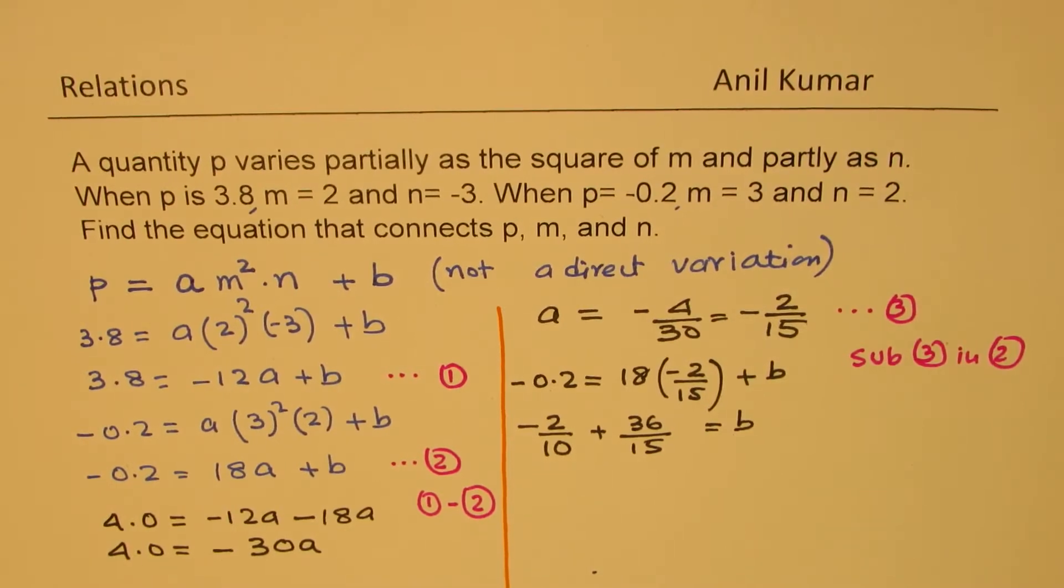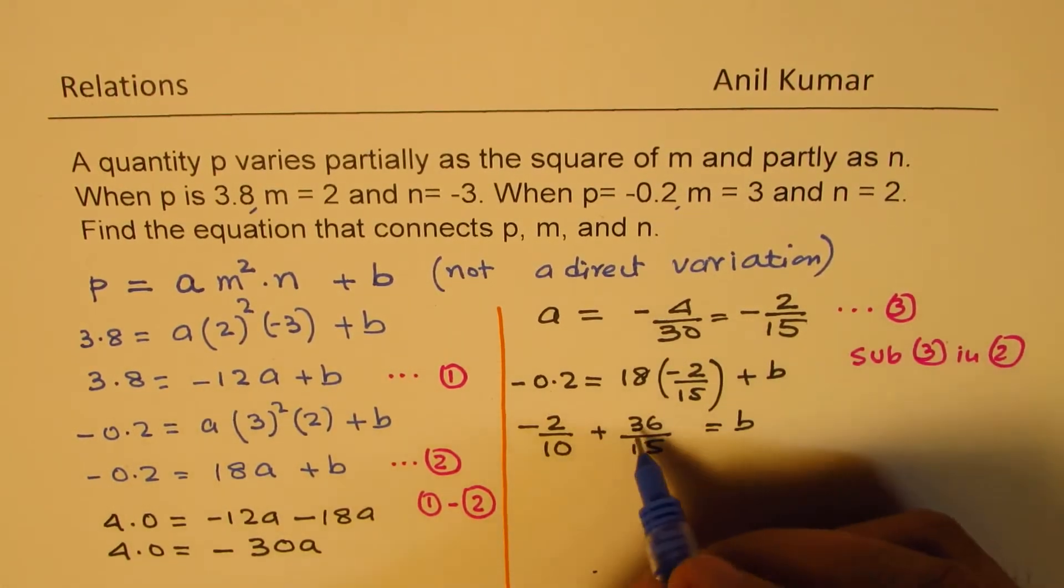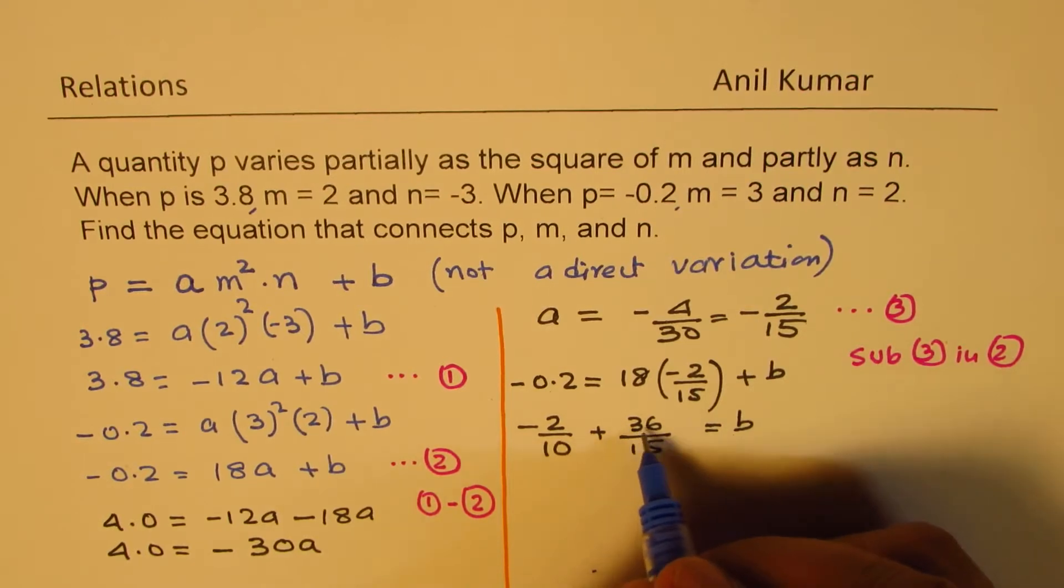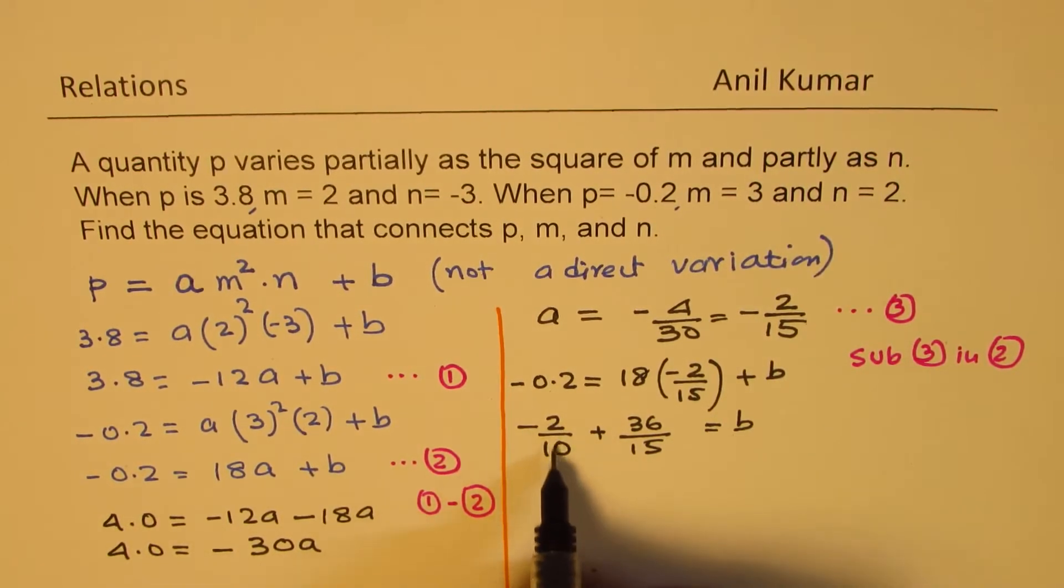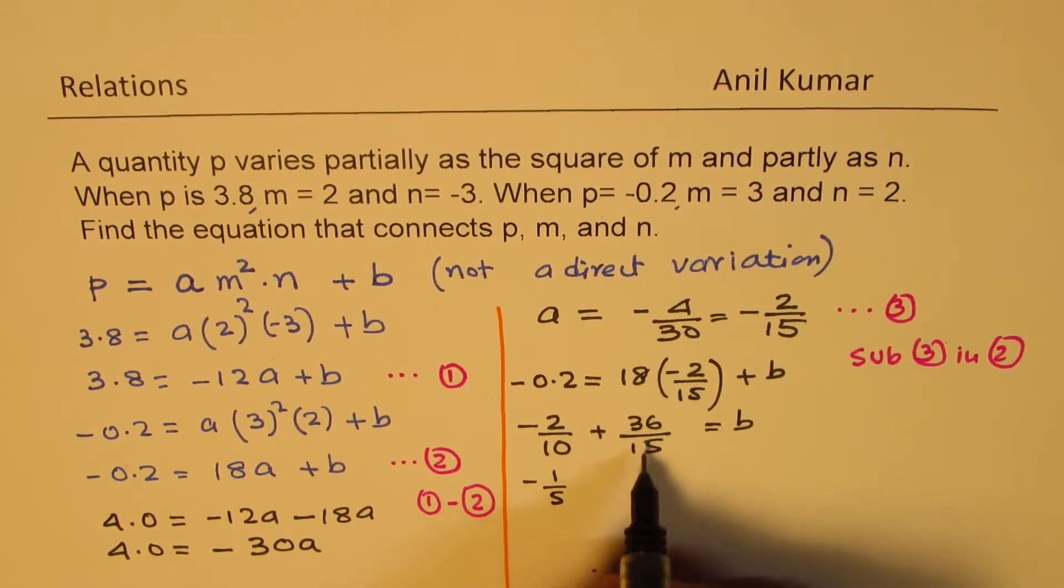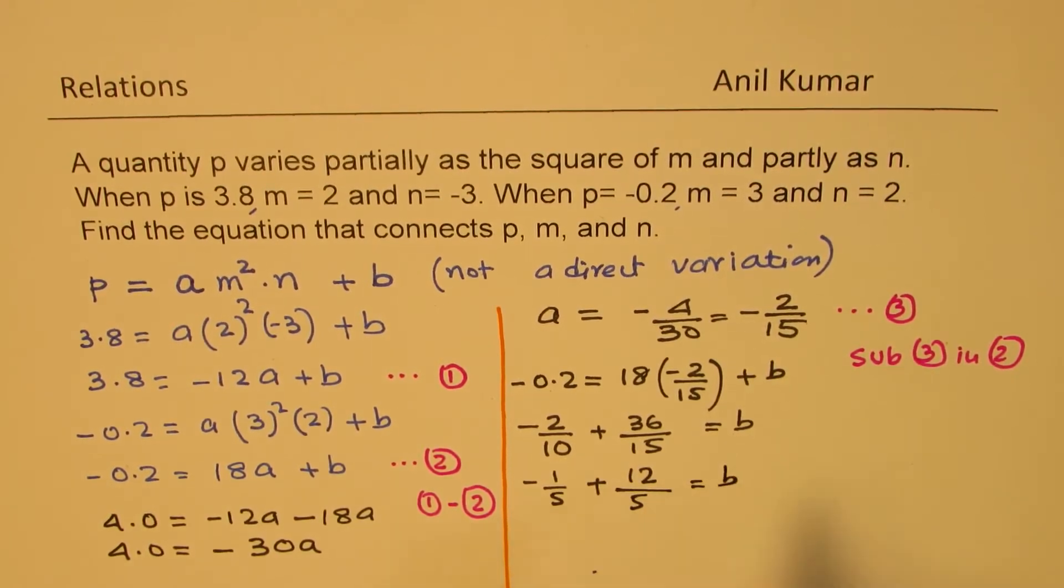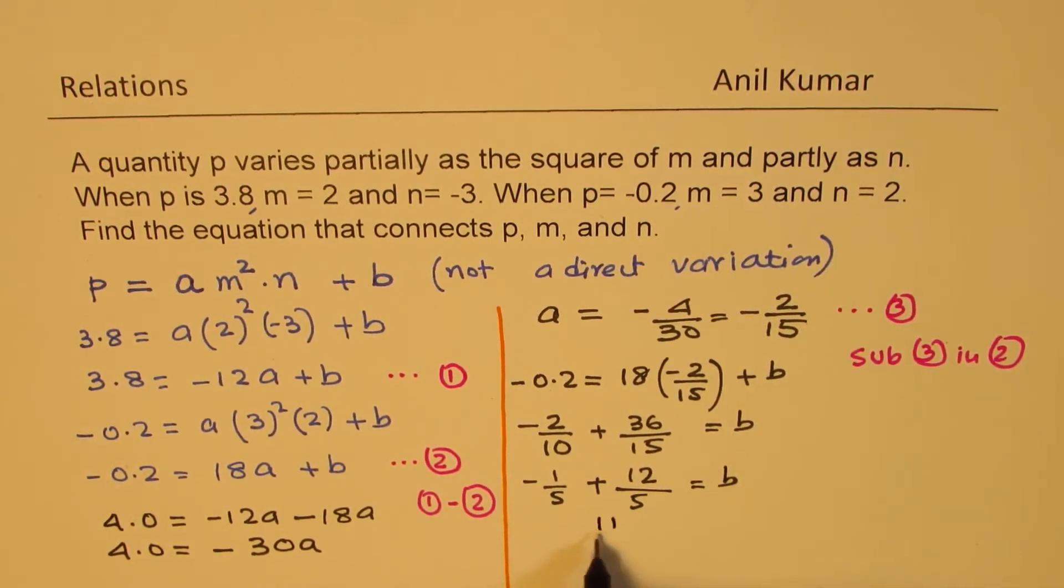This could be divided by 3. And this could be divided by 2. So we get minus 1 over 5, and here when you divide by 3, you also get 5 denominator. So that gives you, dividing by 3 gives us 12 over 5 equals to B. So we get 12 minus 1, which is 11 over 5, as the value of B.